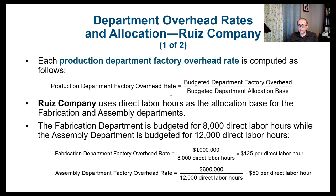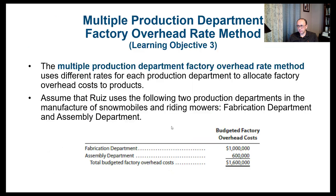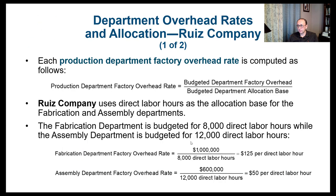Each production department factory overhead rate is computed by taking the budgeted department factory overhead divided by the budgeted department allocation base. Rose Company uses direct labor hours as the allocation base. The fabrication department is budgeted for 8,000 direct labor hours. With $1 million in overhead divided by 8,000 hours, the fabrication department factory overhead rate is $125 per direct labor hour.